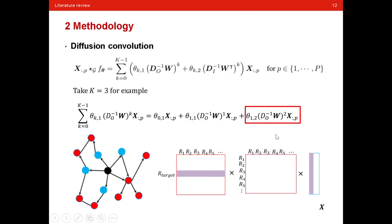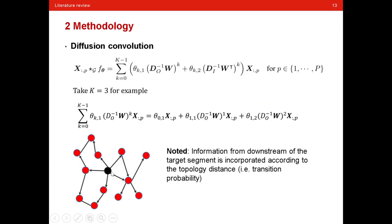And the third part of this formula is similar. It considers, if we consider the second nearest neighbor, downstream neighbor of this road segment, what's the impact it will have on the traffic prediction on the target road segment. And noted, in this way, the information from downstream of the target road segment is incorporated according to topology distance. And you can also say it is the transition probability in diffusion process.